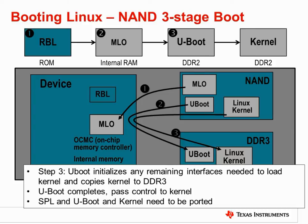In the third step, uBoot initializes any interfaces that it requires which were not already configured by the SPL. The SPL and uBoot are built simultaneously, so uBoot is aware of the configuration that has already been performed by the SPL and doesn't waste cycles reconfiguring those interfaces. Finally, uBoot copies the Linux kernel to the external memory and then transfers control to the kernel to complete the boot process.